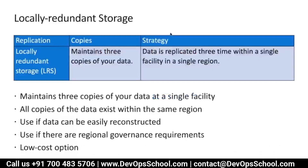In order to understand this mechanism quickly, I have given you diagrams for LRS, ZRS, GRS, and RAGRS in your drive. They will make your concept much clearer. Looking here: LRS, also known as local redundant storage, maintains three copies of your data. Data will be replicated three times within a single data center facility under a single region.